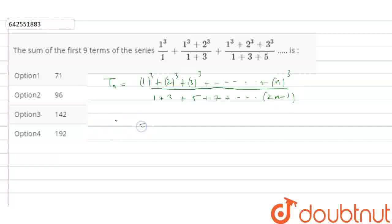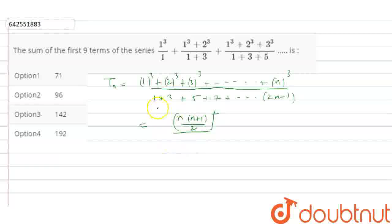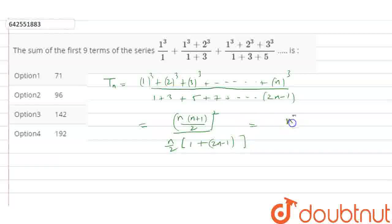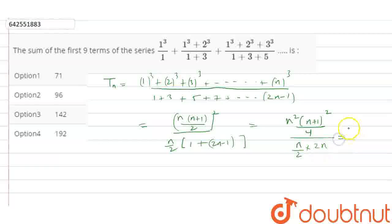We can write the numerator as the sum of n cubes, which equals [n(n+1)/2]², divided by the denominator. As we know, the denominator is an AP, so the sum of n terms is (n/2) × (1 + (2n−1)), giving n². So the expression simplifies to n²(n+1)²/4 divided by n².